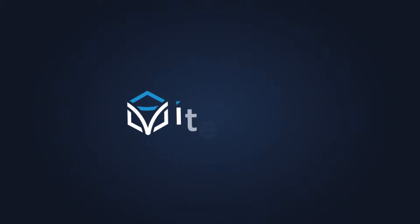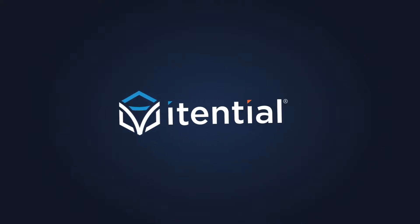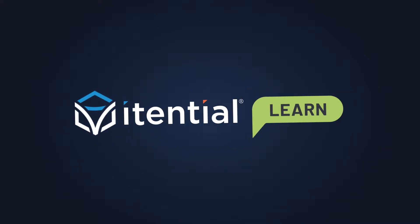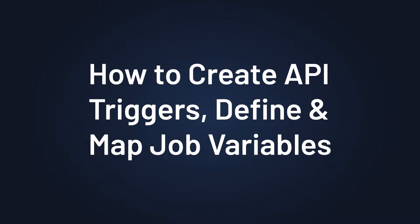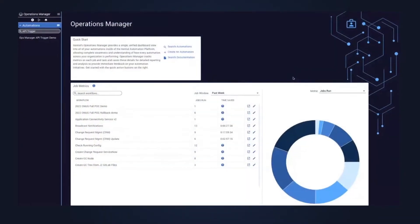Hi, my name's Darf Parry and I'm a Solution Engineer at iTential. Today's video is the first in a series of videos where I'll be showing you how to use the various features of API triggers within the Operations Manager application. Today's video focuses on how to create API triggers and what you need to do to define the job variables to map the data in the request body to the input parameters of the workflow.